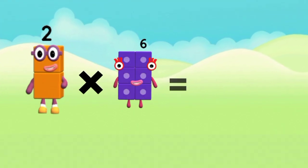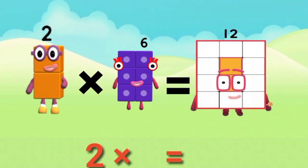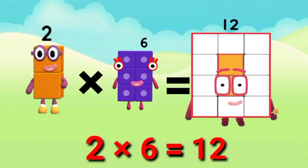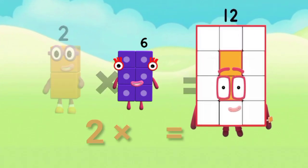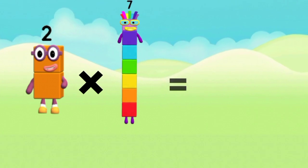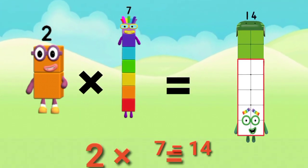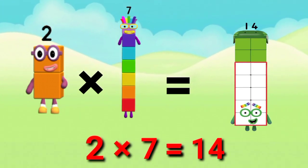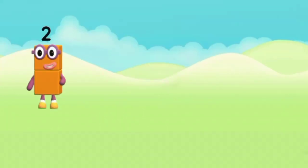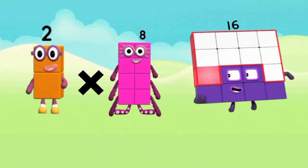Two sixes are twelve. Two sixes are twelve. Two sevens are fourteen. Two eights are sixteen.